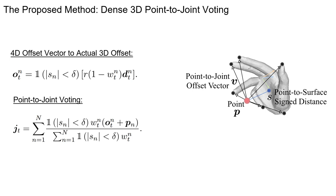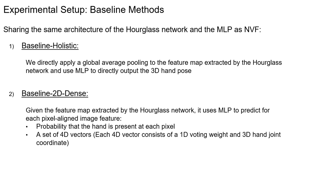During inference, assuming N 3D points sampled in the camera frustum for each image, for each point considered a valid 3D voter, we first convert each 4D offset vector into the actual 3D offset. Then, each camera space joint location is calculated simply by a weighted average over each voter's 3D offset prediction.